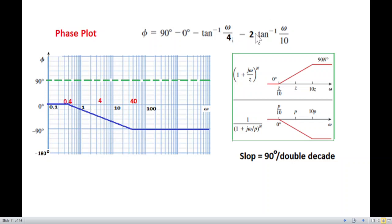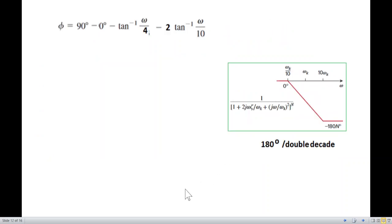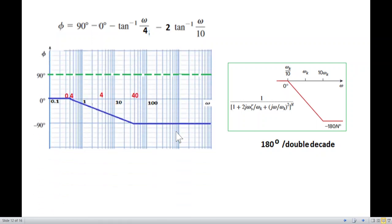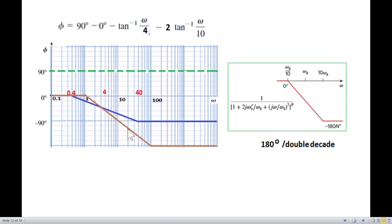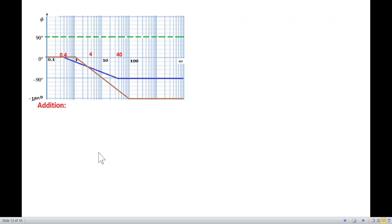Now for the double slope term, it's 180 degrees per double decade. The corner frequency is 10. One tenth is 1, and 10 times is 100. At 1 the value is 0, at 100 it's minus 180 degrees. We connect the line. This is the total phase plot.